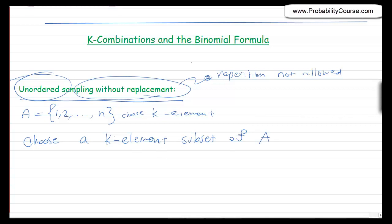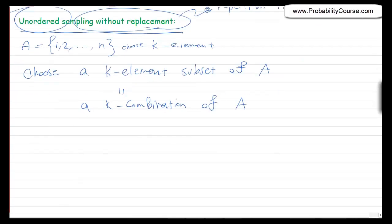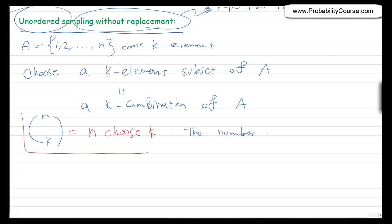Another word for this is a k combination of set A. So the question is: how many of those do we have? How many subsets of size k does A have? We have a notation for this. Basically, we have n elements and we want to choose k of them, so we call it n choose k. That is the notation we use — this is the number of k combinations, or k-element subsets of A, where A has n elements.